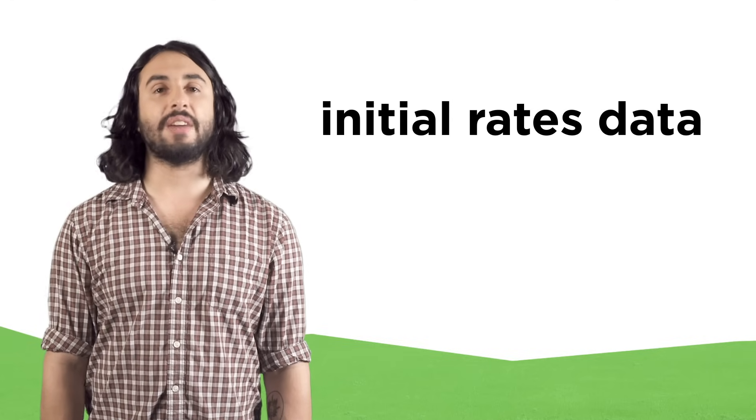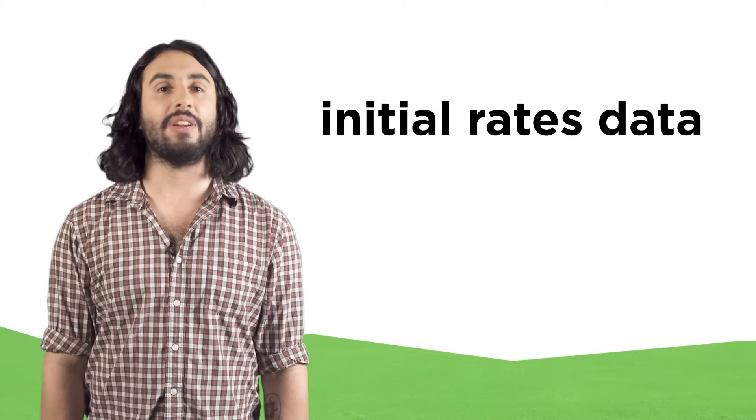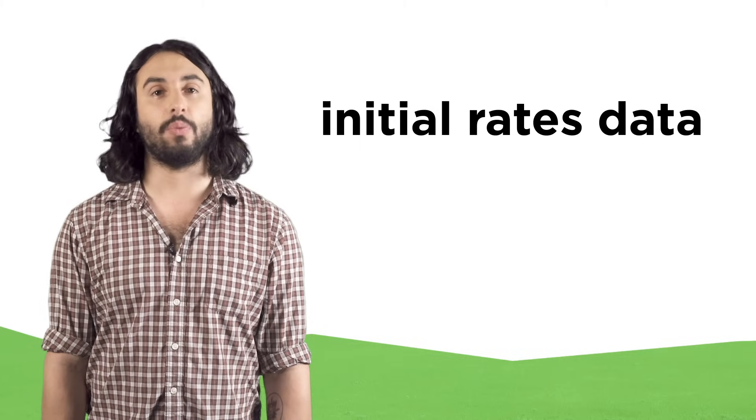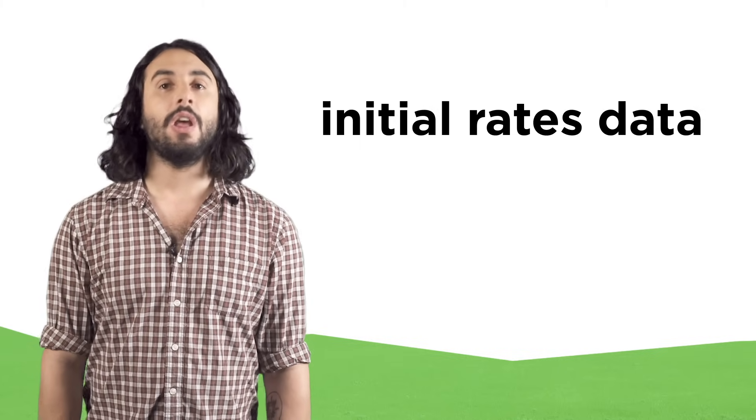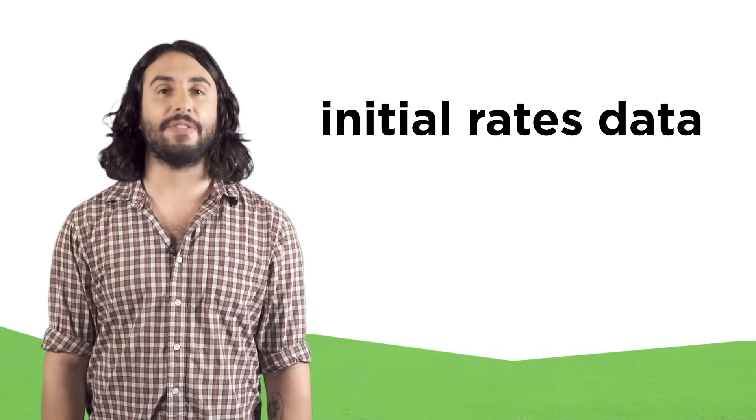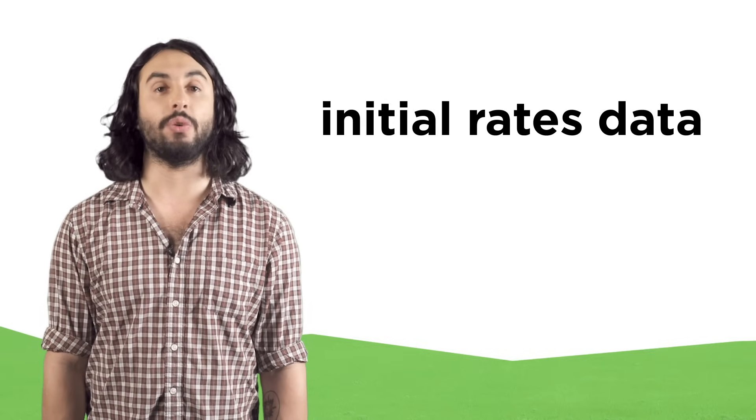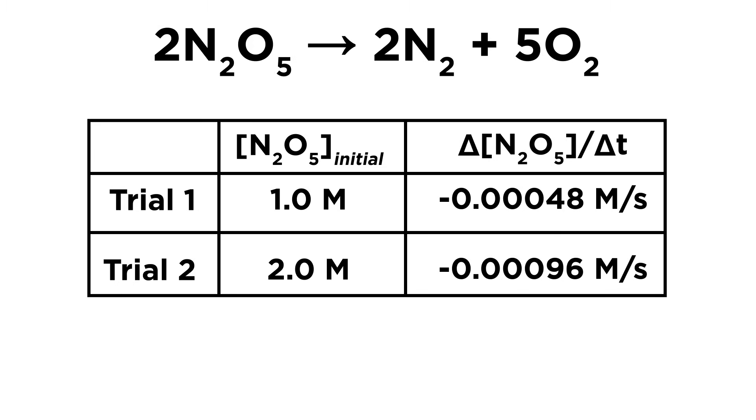We do so by using initial rates data. We can run several trials of a reaction and vary the initial concentration of one reactant at a time. By doing this we can see the effect that one reactant's concentration has on the rate.